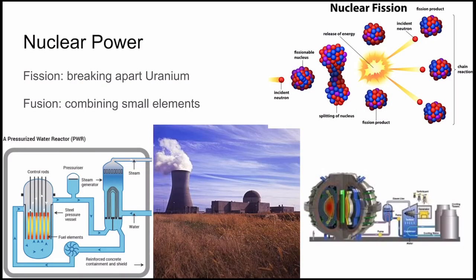Nuclear power. Very likely, you get your electricity from this source. The Sharon Harris Nuclear Power Plant, pictured in the center, provides power to many people in our area. Similar to fossil fuels and biofuels, the heat from both types of nuclear reactions is used to create steam, which turns a turbine and a generator. But instead of using the chemical energy stored in the bonds between atoms, nuclear power unlocks energy stored within the nucleus of an atom, either by breaking it apart in fission, or combining nuclei together in fusion.